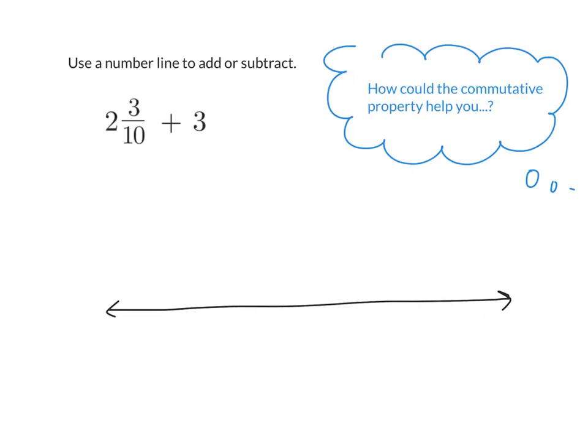Go ahead and copy this problem down: 2 and 3 tenths plus 3. How could I use the commutative property to help me here? You know, commutative property means I'm moving from one place to another and I'm not changing the value. I'm not changing the problem. So is this the same thing as 2 plus 3 tenths plus 3? Do you guys agree? 2 plus 3 tenths plus 3?